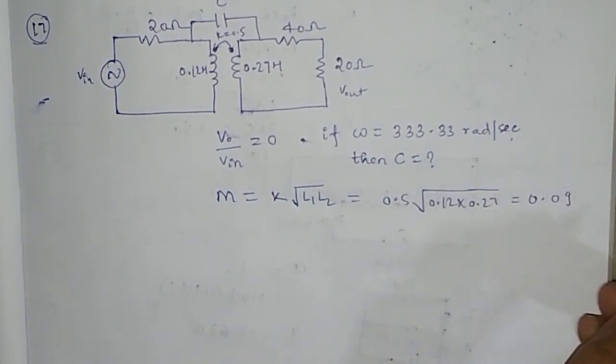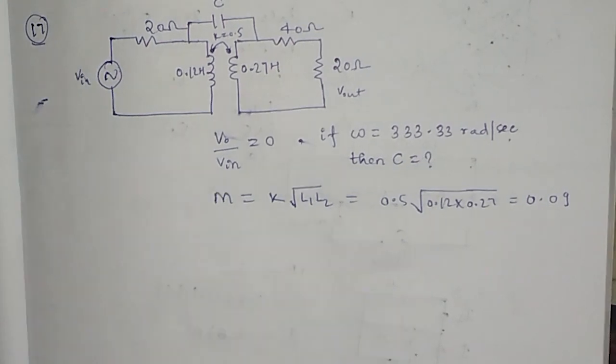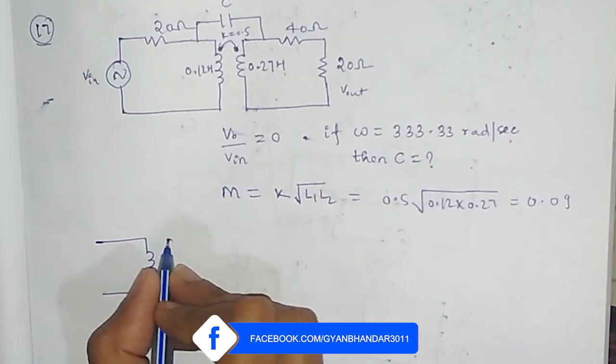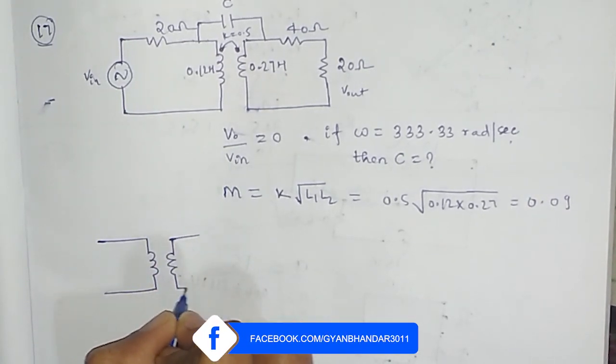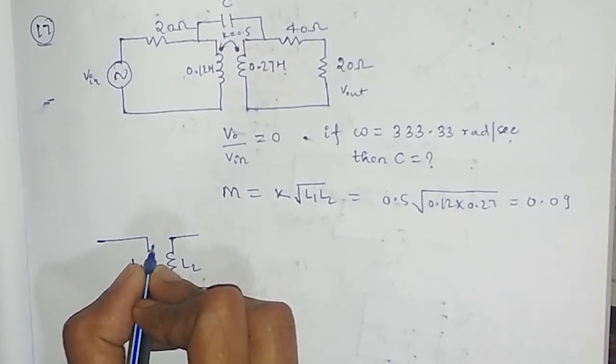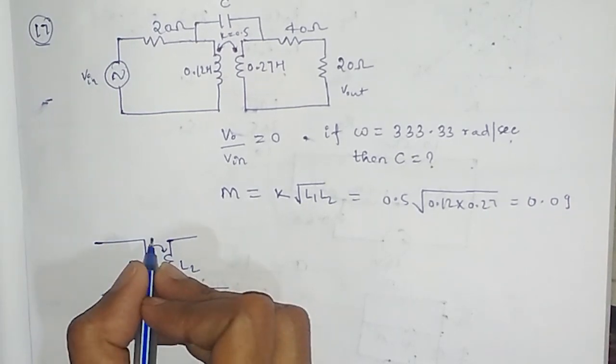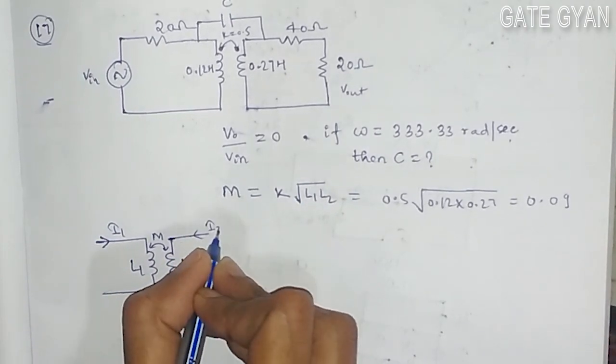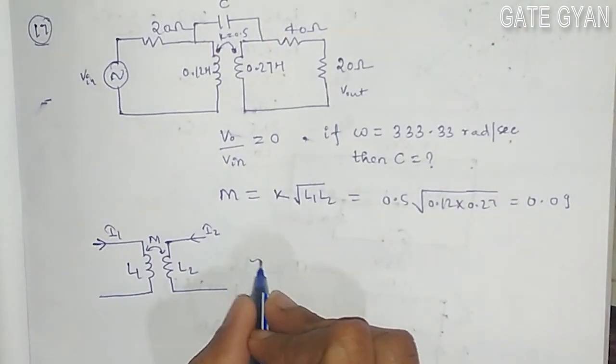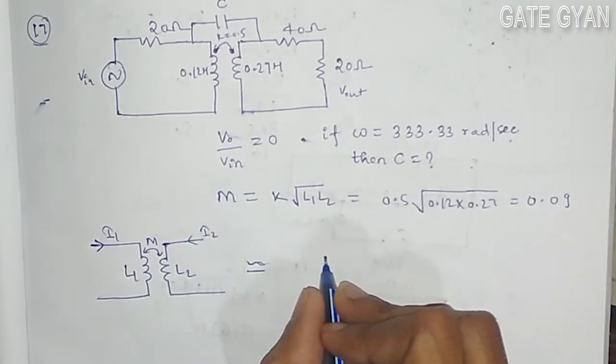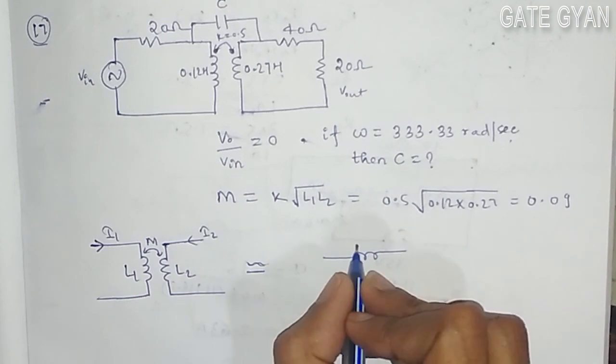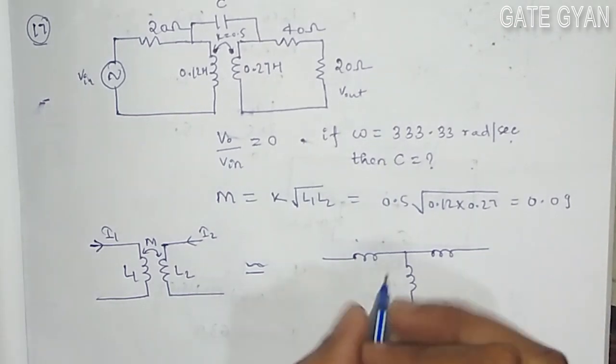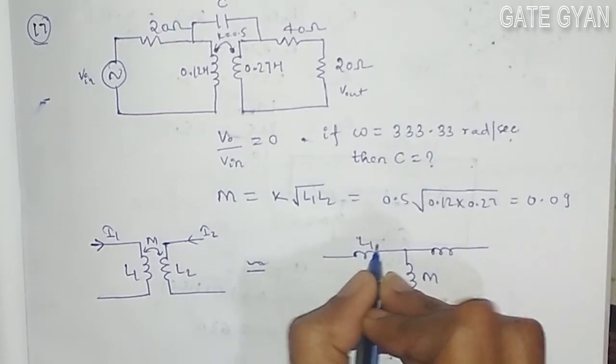Now if a circuit is in the form of L1, L2, and mutual inductance between these two, and current flow is I1 and I2, then I can redraw the equivalent of this circuit.